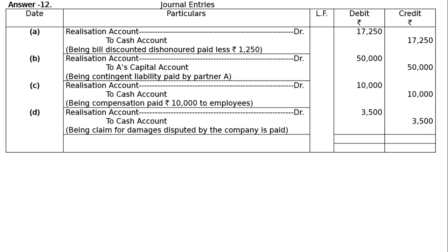The total of both the debit column and credit column amounts to Rs 80,750. This is the final answer.